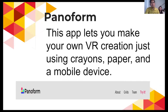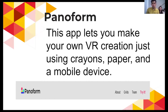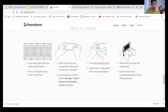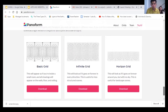The first app I'm going to share is Pano Form. This app lets you make your own VR creations just using crayons, paper, and a mobile device. In science there are many drawing activities, and even in arts this can be used. You download a grid where the student creates their drawing. There are three types of grid: basic, infinite, and horizon.